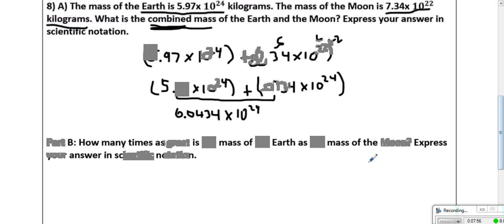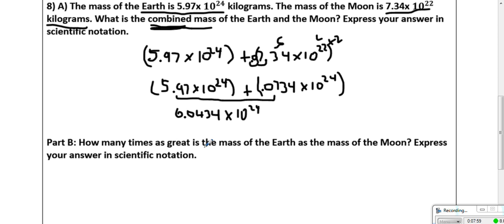And you move on to part B. Part B is asking, how many times as great is the mass of the Earth as the mass of the Moon? The words are not that great, but every time they ask you how many times as great, how many times you have to divide. And that key word is times. How many times as great? That says that you have to divide.